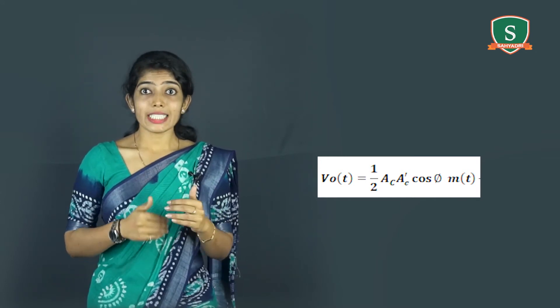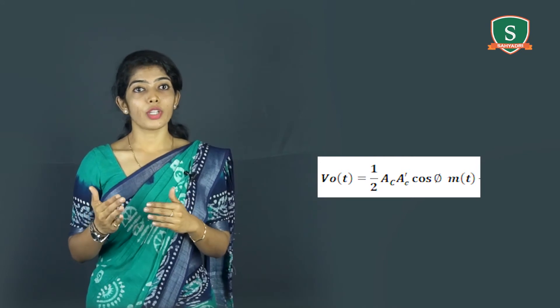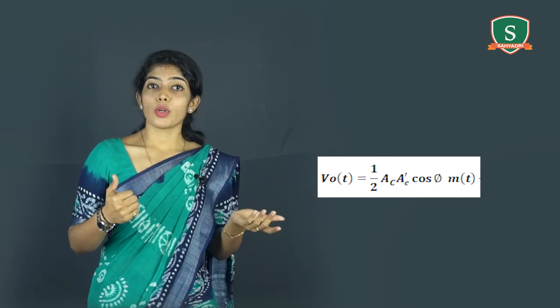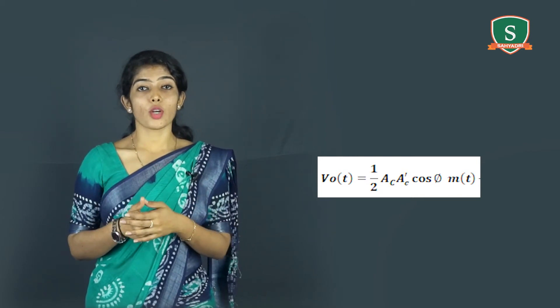is equal to 0 and is minimum when phi equals ±π/2. The zero demodulated signal which occurs for phi = ±π/2 represents the quadrature null effect of the coherent detector.